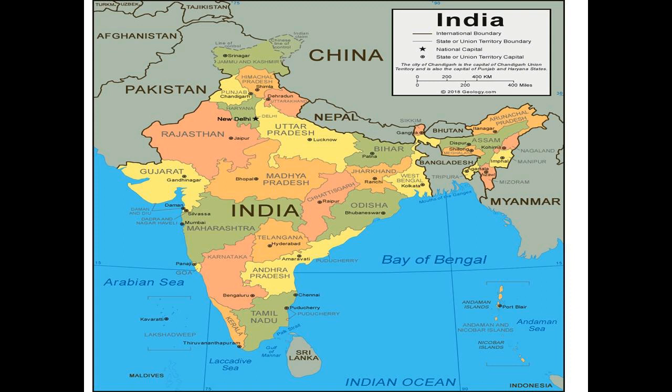These keys make our work easy — we can easily interpret the map with the help of these keys. The second element is the scale. In the same box, you can see at the bottom there is a straight line with some digits written — this is the scale. The third element is the title of the map, which is 'This is the map of India.'